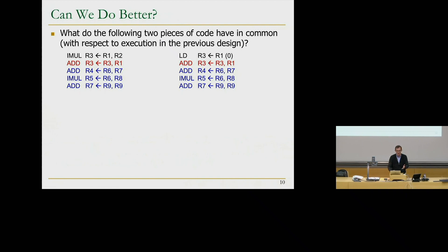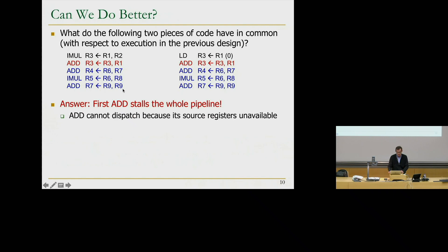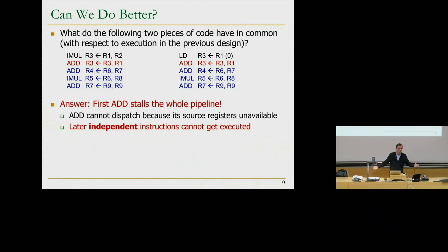It's difficult for a compiler to reorder code around a load — how are you going to fill thousands of cycles without stalling? The common problem in both cases is that the ADD stalls the pipeline because its source register is unavailable. As a result, the later independent instructions — the blue ones — cannot get executed, and you lose performance.